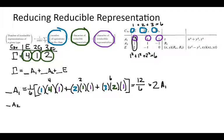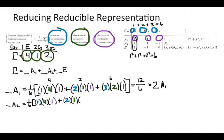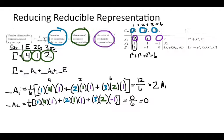Next we do the same thing for A2, which goes a bit faster since we already know the order. The first two numbers — the number of operations and the reducible representation characters — are the same. The difference is in the A2 irreducible representation characters: the first two are ones, but this last number is negative one for sigma V. So we get four plus two minus six, which equals zero. There are zero A2s in our sum.